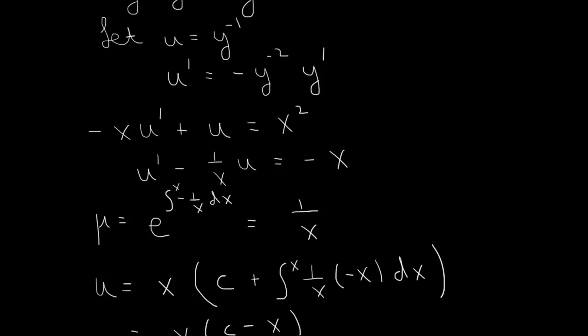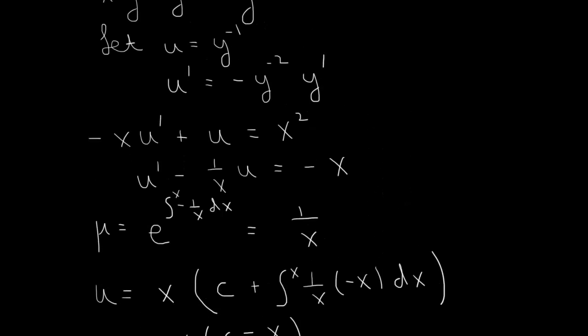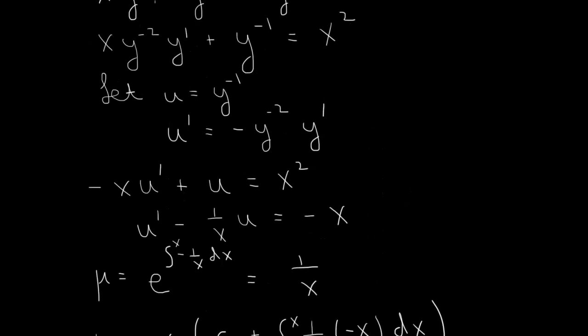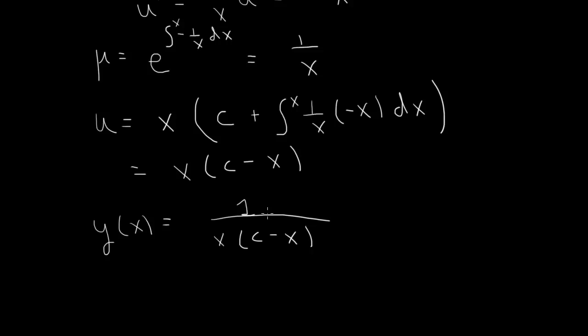And then u is 1 over y. So we get y, then, as a function of x, is 1 over u. So it's 1 over x times c minus x. And that constant here will be used to satisfy whatever the initial conditions are given for y. Here, it won't be at x equals 0 because this is a nonlinear equation that has a singularity at x equals 0. So instead, the initial condition will give y at some other value of x.